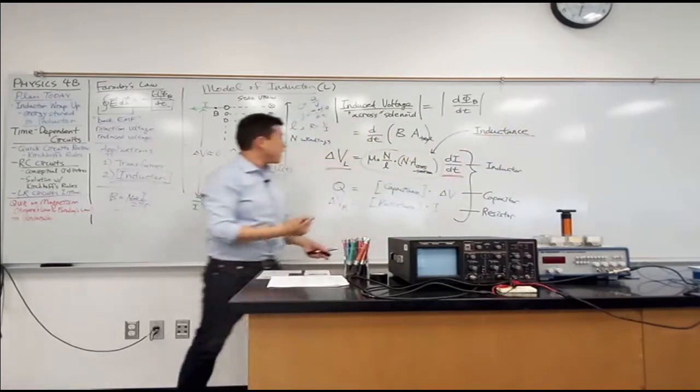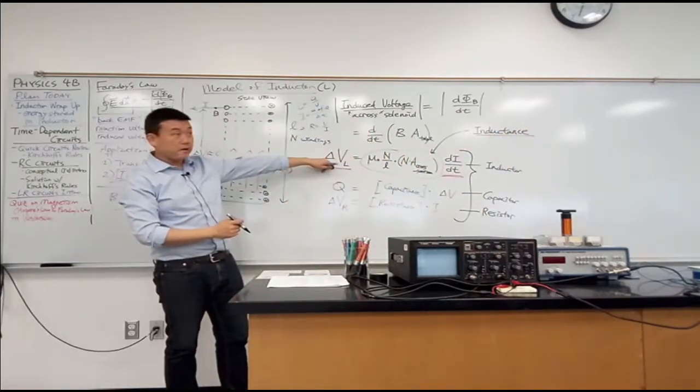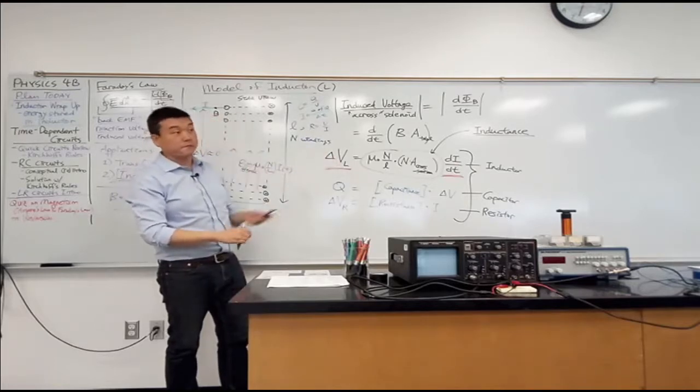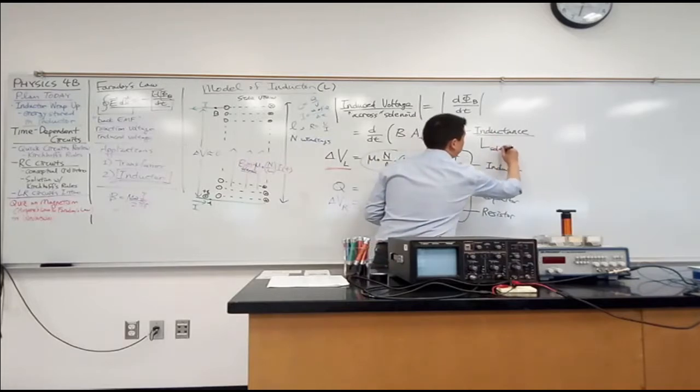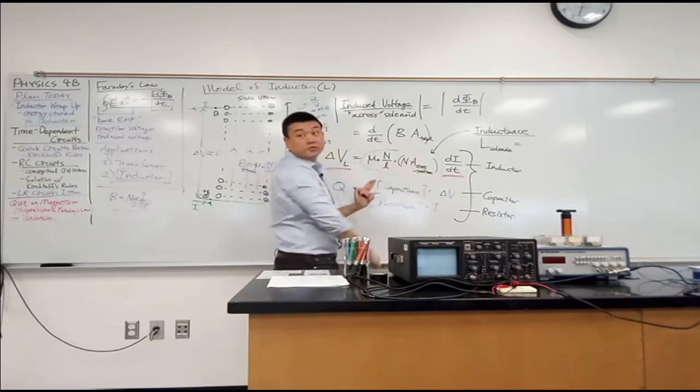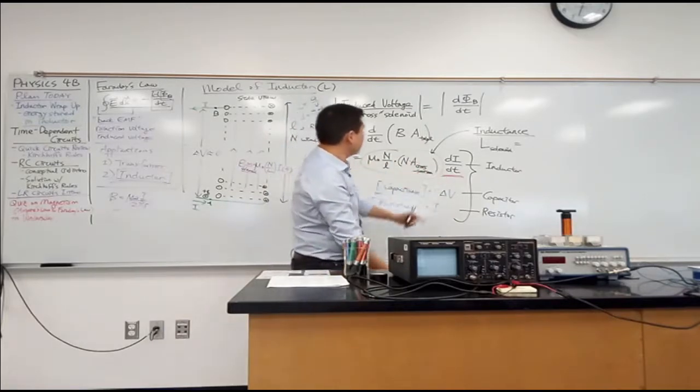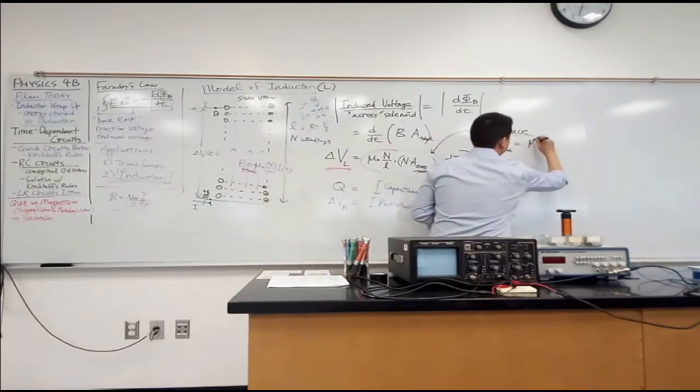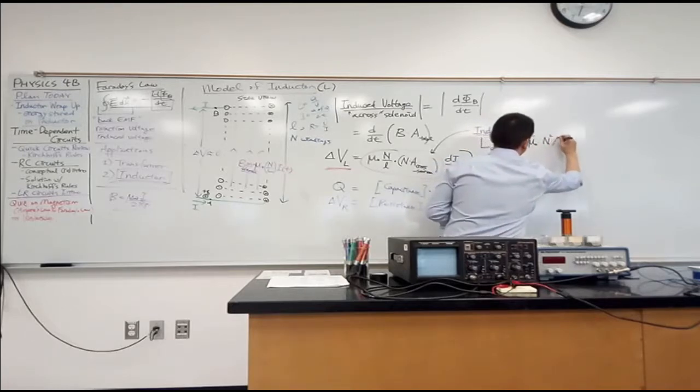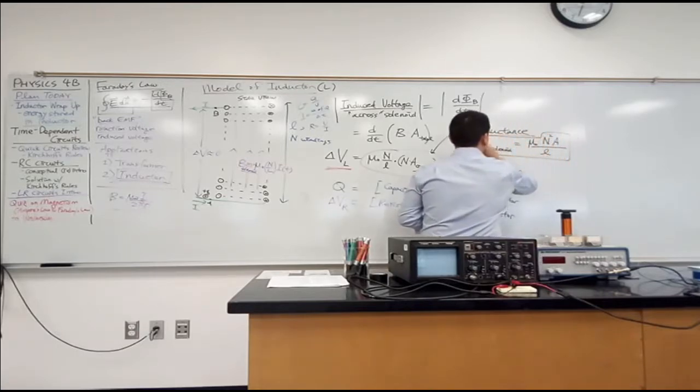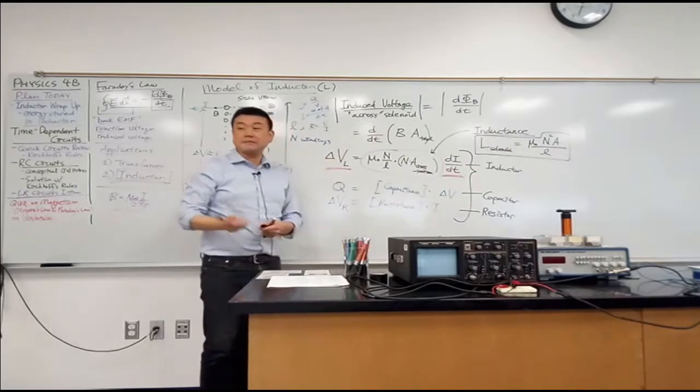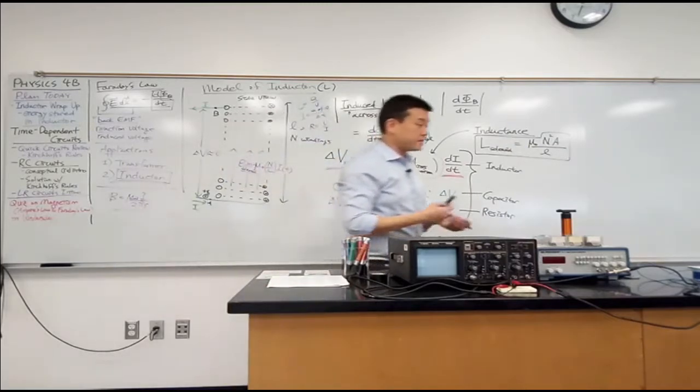Or here's another way to state what we derived here, using Faraday's law. We can say the inductance L of a solenoid is all this quantity multiplied together. So I'm simplifying it a little bit. It's mu naught times n squared a divided by L. So this is the inductance of a solenoid.